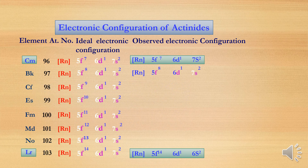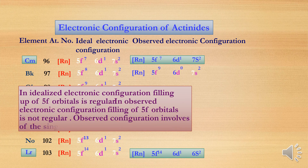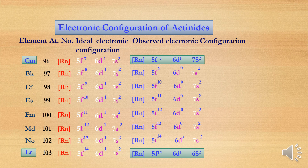For atomic number 97, the ideal configuration is 5f⁸ 6d¹ 7s². In the observed electronic configuration, the one electron moves to the 5f orbital. In the ideal electronic configuration, filling of the 5f orbital is regular, whereas in the observed electronic configuration, filling of 5f is irregular. In the observed configuration, the single electron shifts from 6d to 5f subshell. For element 102 (nobelium), 5f¹⁴ is completely filled, providing extra stability.